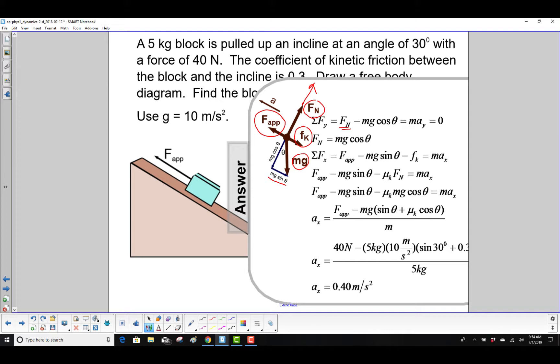But the block is not bouncing up and down, so that acceleration is 0. So we have our first formula here. The normal is mg cosine theta.